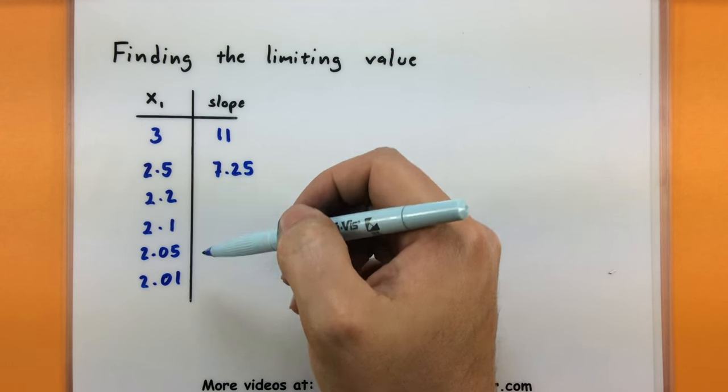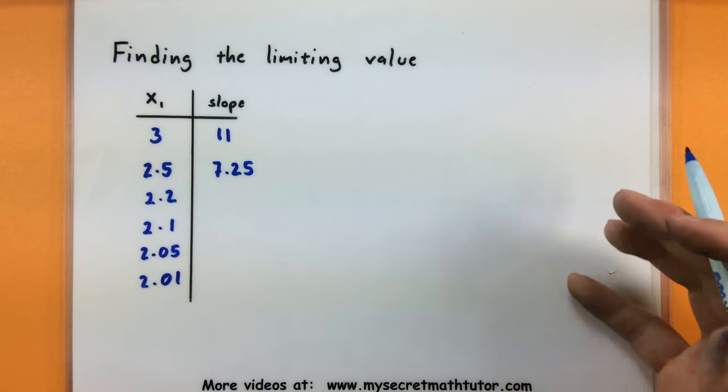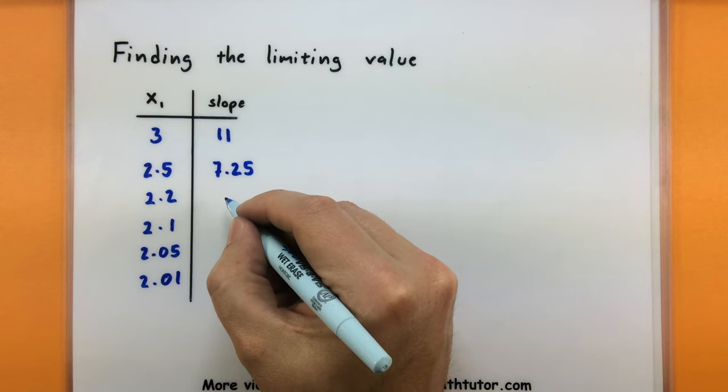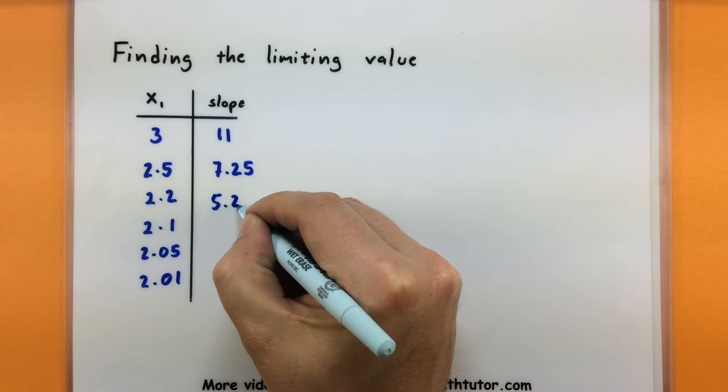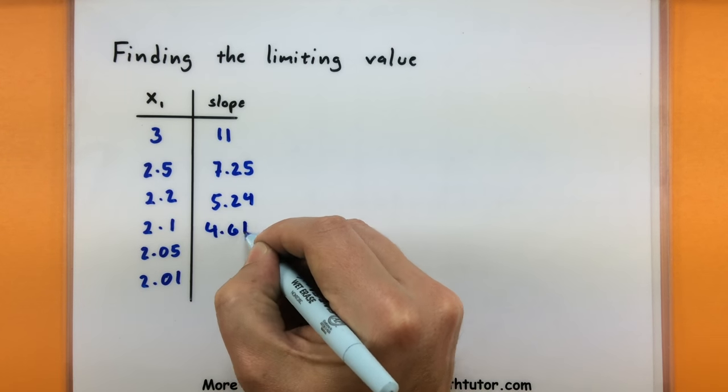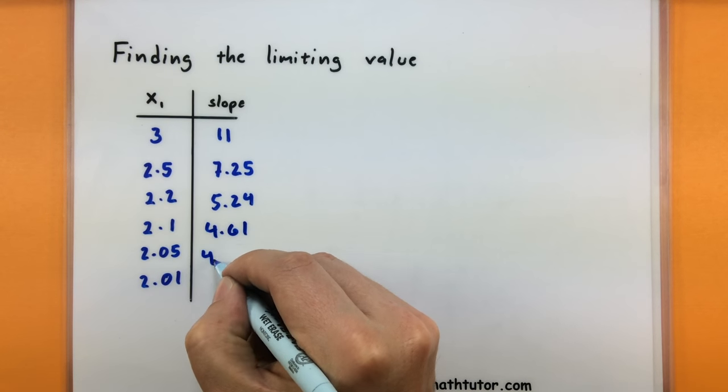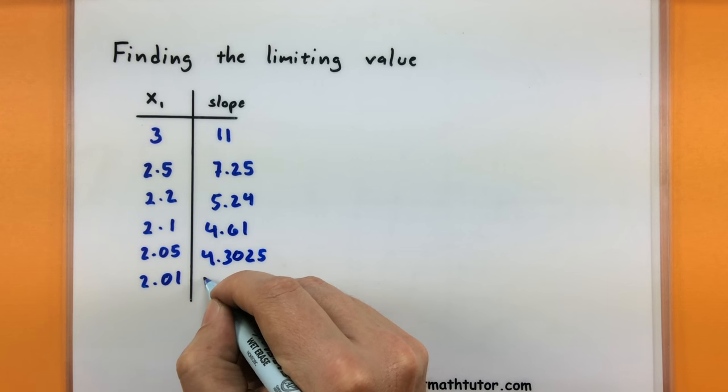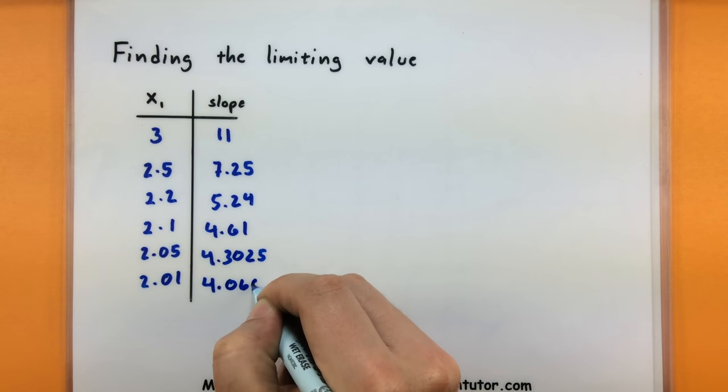And what you really want to pay attention to is are these getting close to any specific value? So let's see, when I used 2.2, this gave me 5.24, 2.1 gave me 4.61, 2.05, 4.3025, and 2.01 gave me 4.0601.